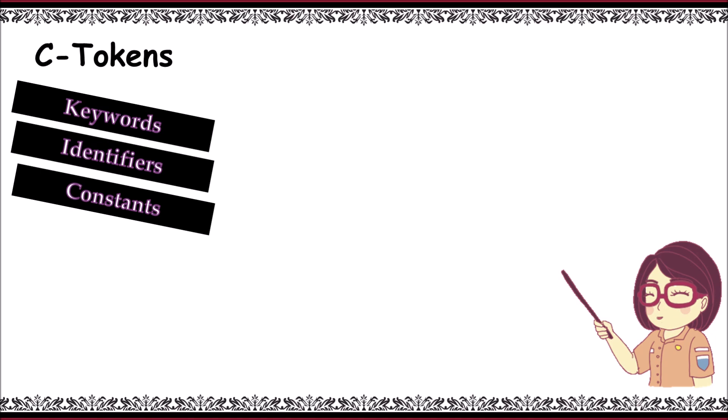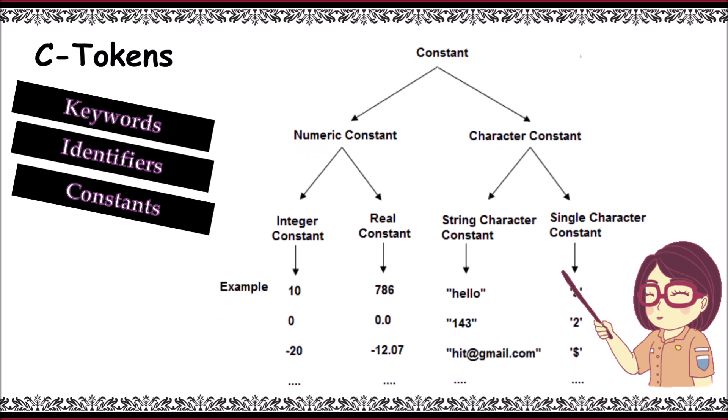The next one is constants. Constants are fixed values that never change during the execution of a program. Constants are categorized into two parts: numeric constants and character constants. Numeric constants are further divided into integer constants, which contain whole numbers, and real constants, which contain fractional parts.